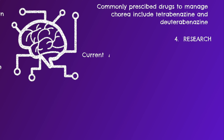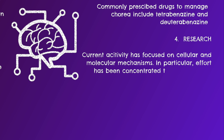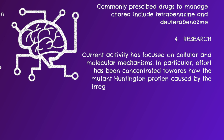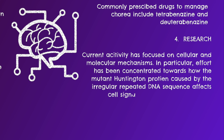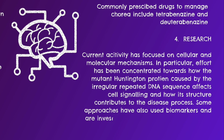Current research activity has focused on cellular and molecular mechanisms. In particular, effort has been concentrated towards how the mutant Huntington protein, caused by the irregular repeat DNA sequences, affects cell signaling and how its structure contributes to the disease process. Some approaches have also used biomarkers and are investigating the potential of stem cells as therapy.